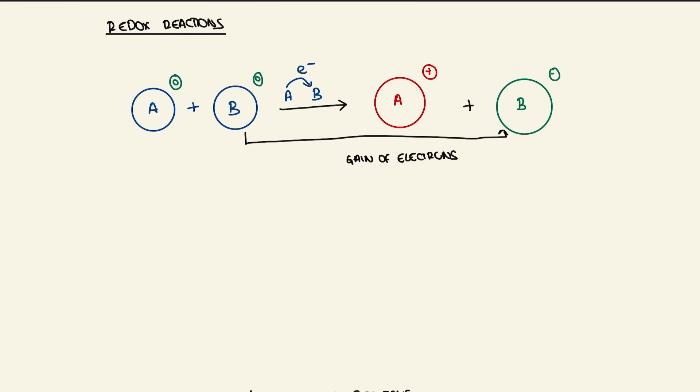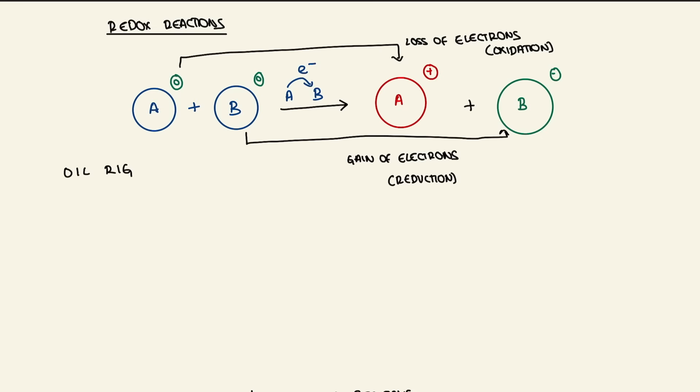Redox reactions involve both reduction and oxidation. Reduction is the gain of electrons and oxidation is the loss of electrons. Reduction occurs at the cathode and oxidation occurs at the anode. Something that you need to know or is a useful mnemonic is OIL RIG, which is oxidation is loss, reduction is gain. And PANIC, which is positive is anode, negative is cathode.